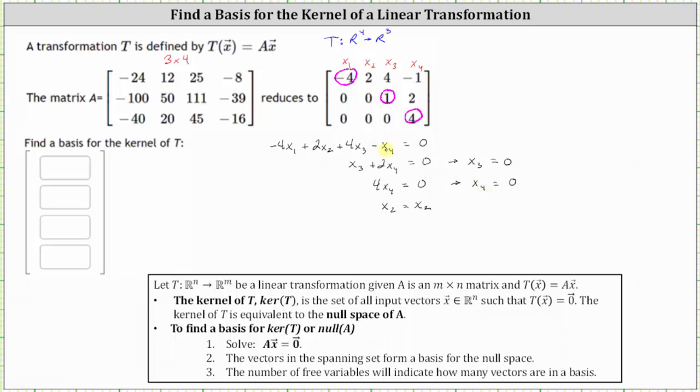So if x four and x three both equal zero, notice for this first equation, we would have negative four x one equals negative two x two. Again, four x three minus x four is zero. So as I did here, we subtracted two x two on both sides. And then dividing both sides by negative four to solve for x one, we have x one equals one half x two.